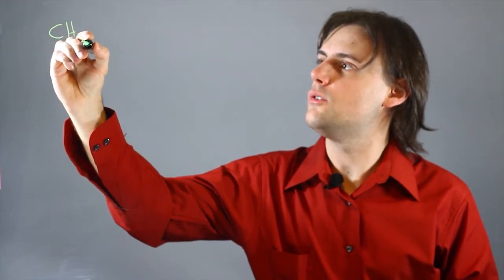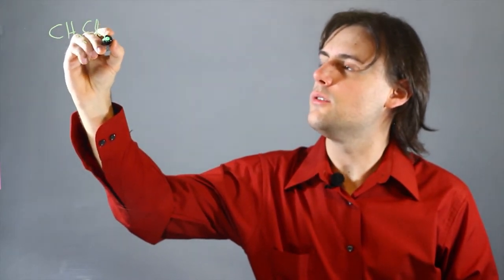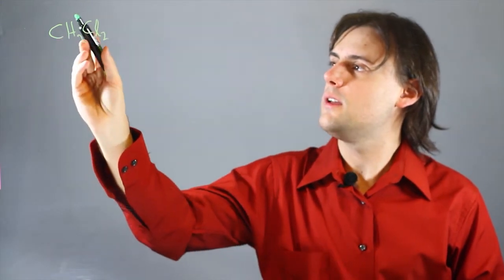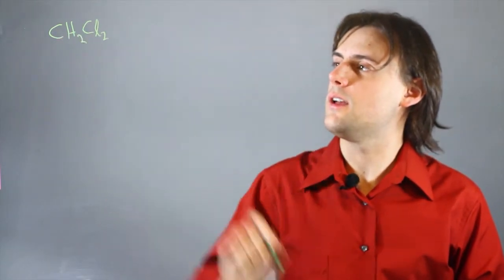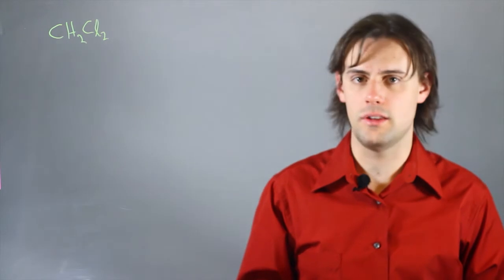Dichloromethane is an organic compound that has the chemical formula CH2Cl2, meaning there's a carbon atom, two hydrogen atoms, and two chlorine atoms in the molecule.